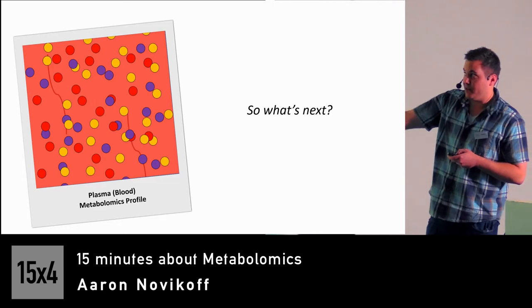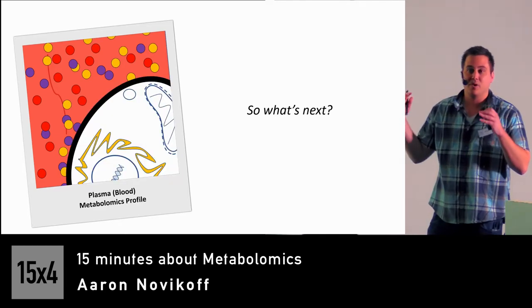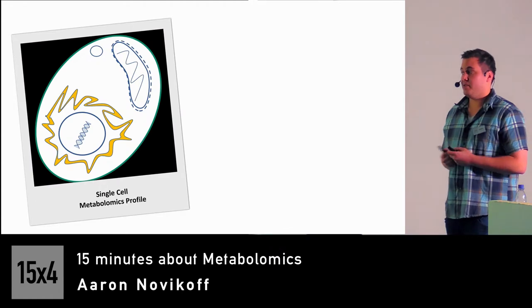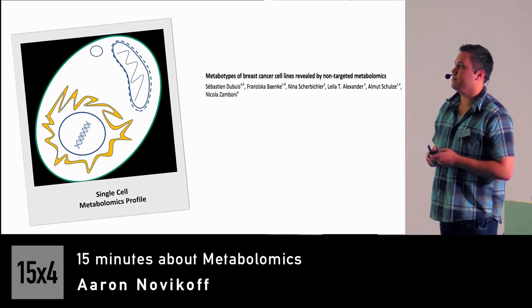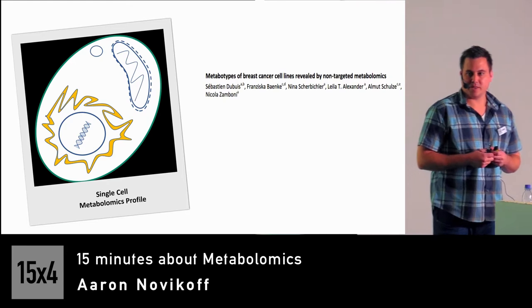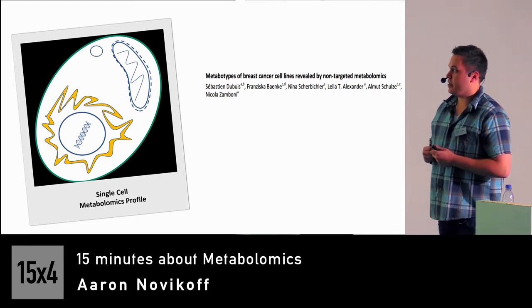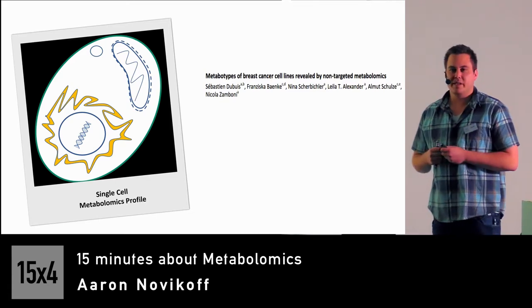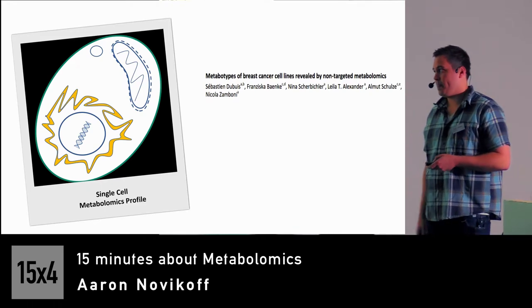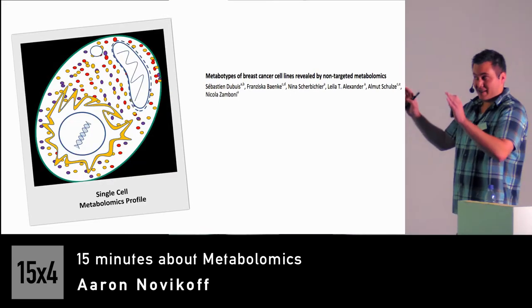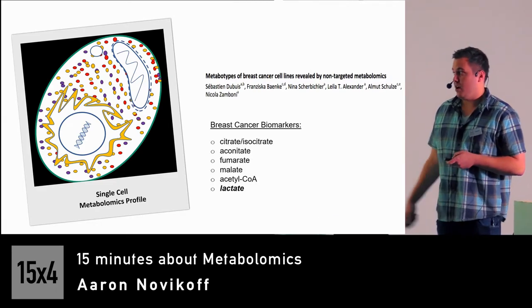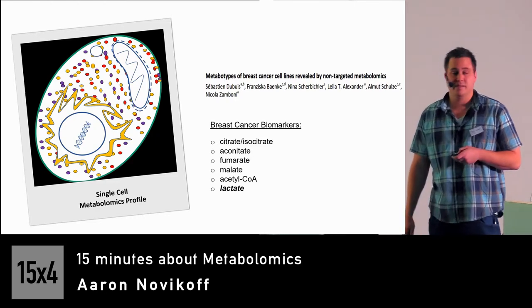As metabolites travel through the blood they enter the cell, where all those enzymatic processes occur. This brings us to single-cell metabolomics. Dr. Zamboni at ETH Zurich wanted to find out if breast cancer cells are metabolically different from normal cells. He took a metabolic picture of the cell and identified biomarkers: citrate, aconitate, fumarate, malate, acetyl-CoA, and lactate — which separate the two cell types.